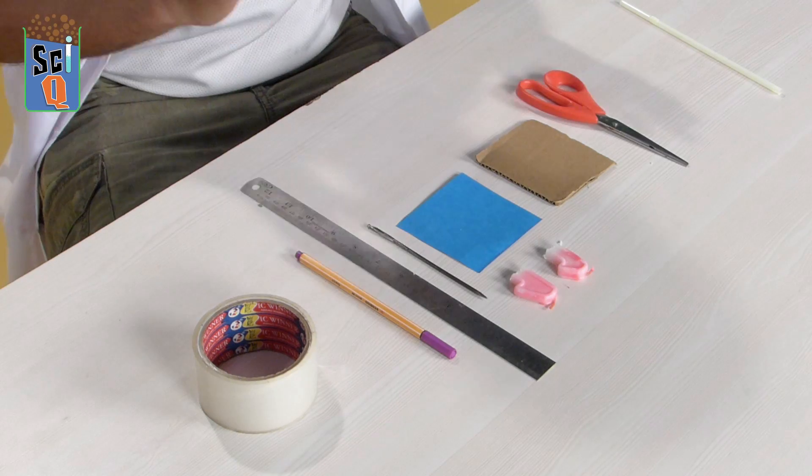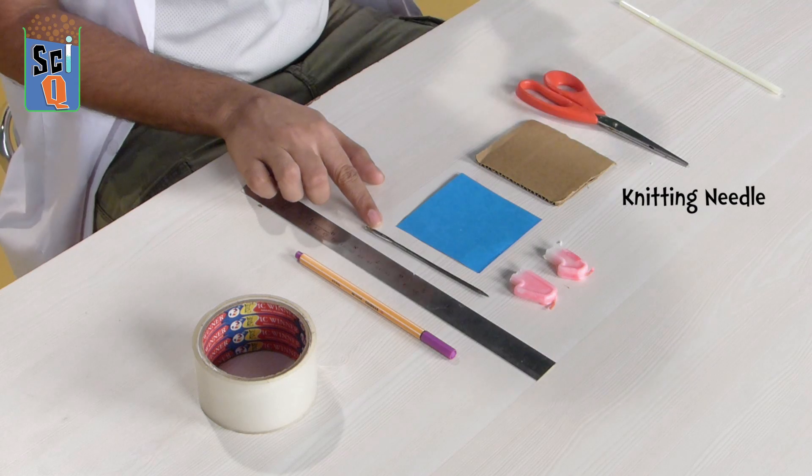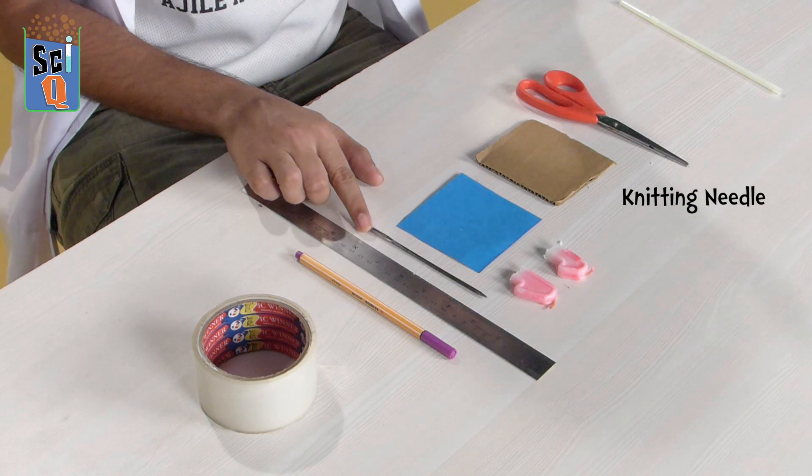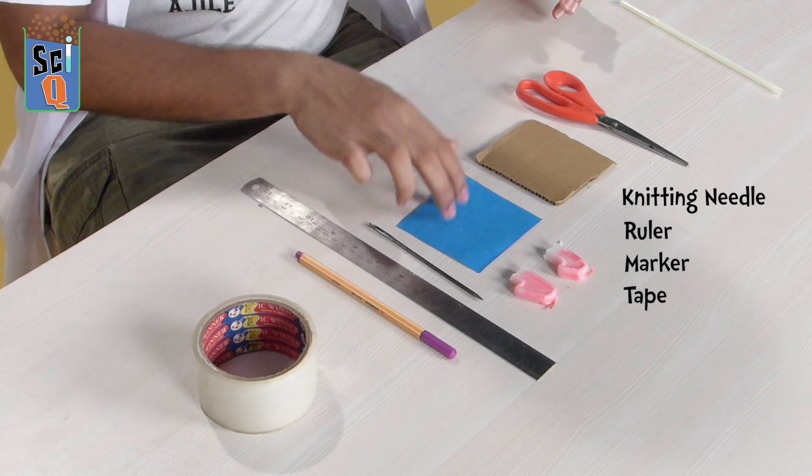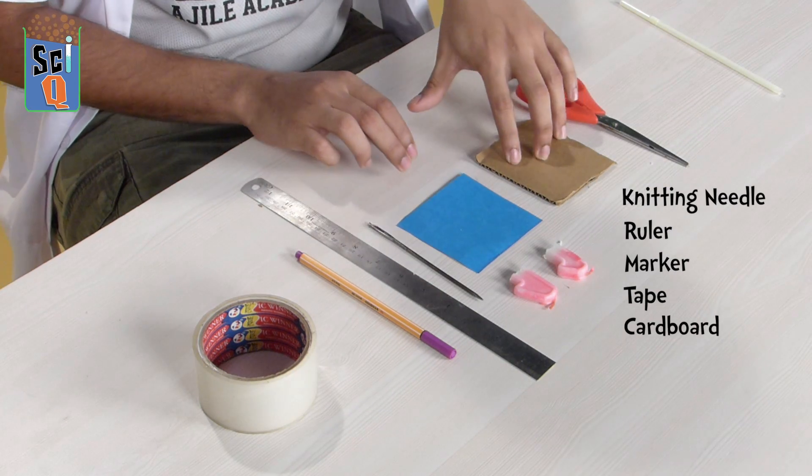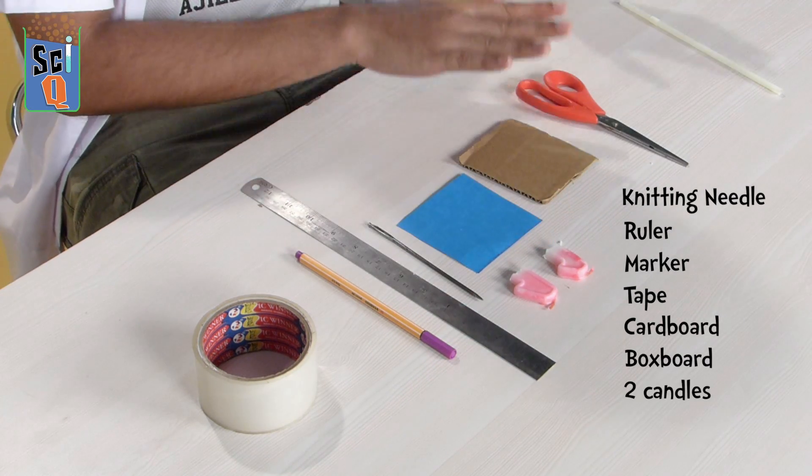What are we going to need for this? Well, for starters we're going to need a knitting needle, so I suggest you ask your mom for this and she should help you out. A ruler, a marker, some tape, a square piece of cardboard, a square piece of box board, a couple of candles, scissors, and a straw. So let's get started.